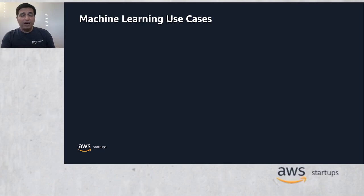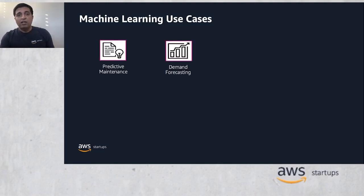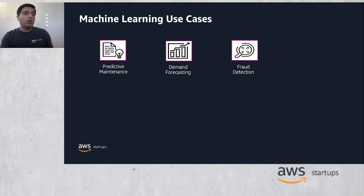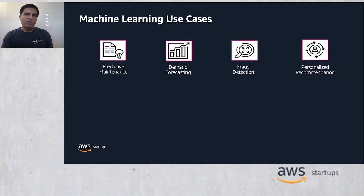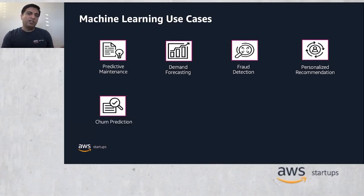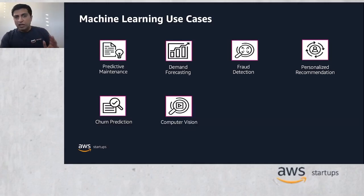Predictive maintenance: taking preventive actions such as part replacement and servicing at the right time to help extend the remaining life of their machinery. Demand forecasting: to forecast demand, reduce inventory cost and waste, and accurately make decisions on time to meet customer expectations. Fraud detection: by automating the detection of suspicious transactions and other anomalous behavior to reduce potential financial loss. Personalized recommendations: delivering customized and unique experiences to their customers. Churn prediction: by predicting the likelihood of customer churn and improving customer retention.